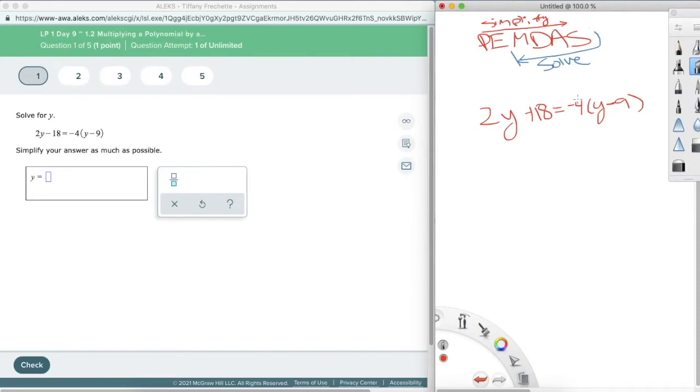So I need to take this 4 that's being multiplied on the outside and I need to distribute this. 2y plus 18 is actually simplified as far as it can go. There's nothing more I can do on this side, but we'll keep checking just to make sure. So negative 4 times y is just negative 4y. Negative 4 times negative 9, so now we have two negatives, that makes a positive, and 4 times 9 is 36.